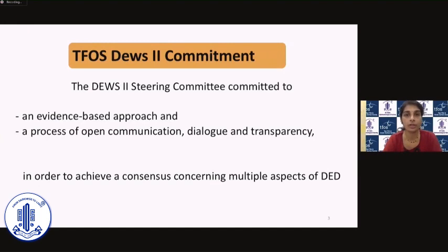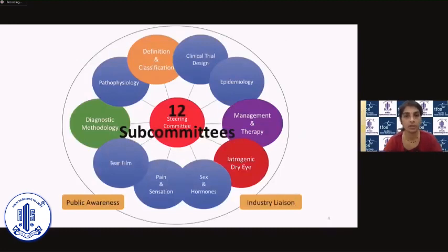the TFOS DEWS II steering committee basically wanted to provide an evidence-based approach and a process of open communication, dialogue and transparency in order to achieve a consensus concerning multiple aspects of dry eye disease. There were 12 subcommittees, and the ones highlighted in color are the ones we are going to be talking about today. I will be focusing on the definition and classification subcommittee.